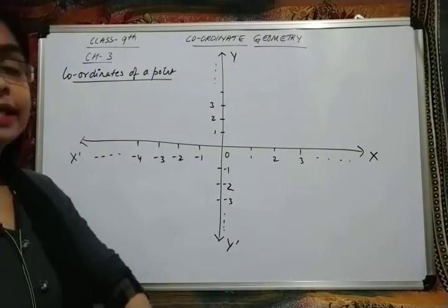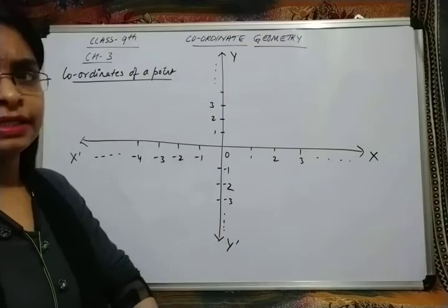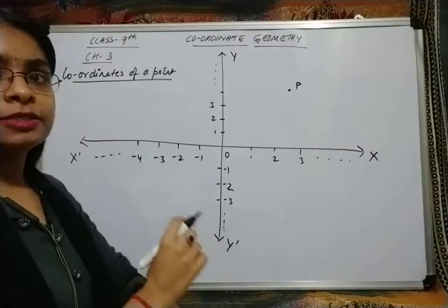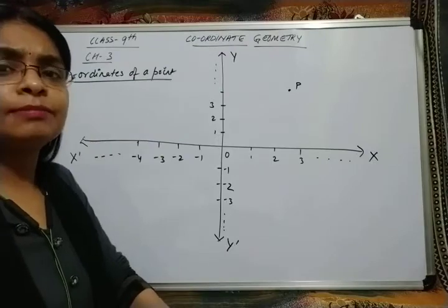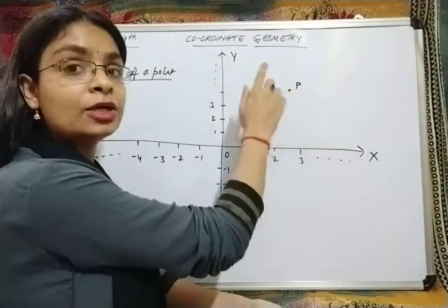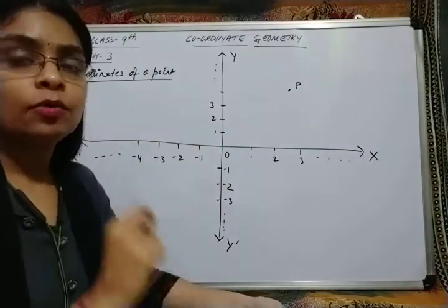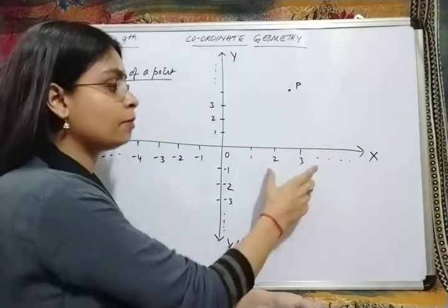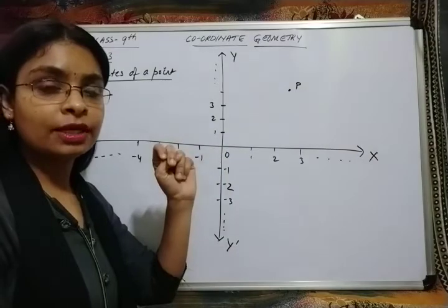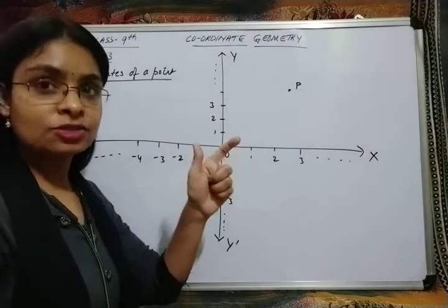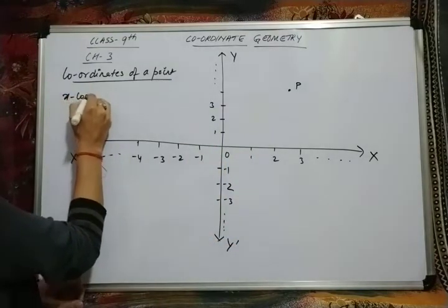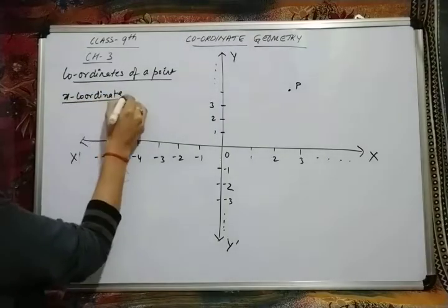Now we will discuss the coordinates of a point — how to locate a point in the Cartesian system. Suppose I take one point and want to locate its position. We locate its position by its coordinates. The coordinates of any point are its perpendicular distance from the x-axis and the y-axis. Since there are two axes, there will be two coordinates: one is the x-coordinate and another is the y-coordinate.